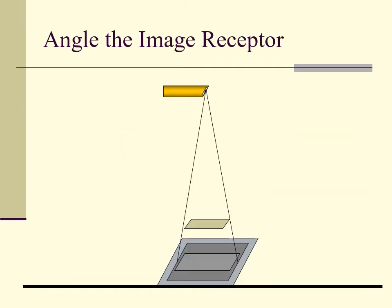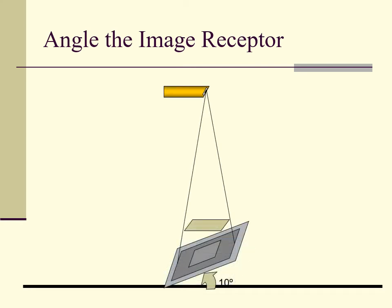Probably the least used angle utilized in radiography is to angle the image receptor. Usually, image receptor angles are used to orient the image receptor parallel to the body part, such as positioning the image receptor parallel to the femoral neck for a cross-table shoot-through of the hip. With that said, angling the image receptor will distort the final image and probably should be avoided.